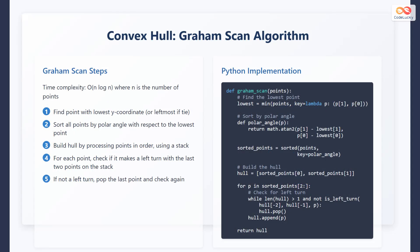Now let's look at how to compute the convex hull using an algorithm called the Graham Scan. The Graham Scan algorithm has a time complexity of O(n log n), where n is the number of points. Here are the steps.